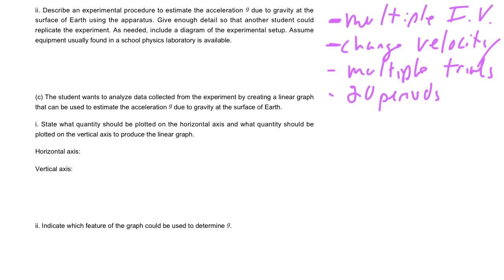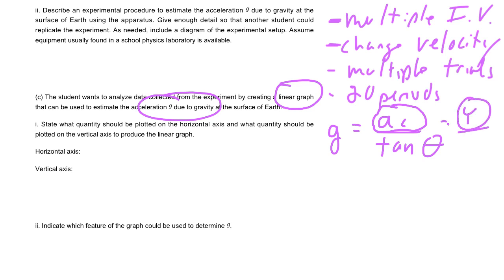The last part of the question is they want you to say how you're going to create your graph to find little g. We had g equals AC over tan theta. If you describe in your procedure how to find AC, you could graph on your y-axis your AC and on your x-axis your tan theta. That would be fine as long as you describe how to get AC. Remember AC was V squared over R.